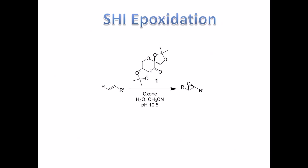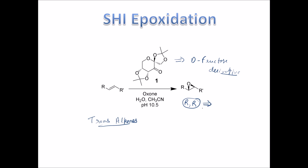The third reaction is Shi epoxidation. Always remember it is used for trans unfunctionalized alkenes. The stereochemistry of the epoxide formed will always be RR when using this catalyst, which is a D-fructose derivative. Whenever you carry out Shi epoxidation, the epoxide formed will have RR stereochemistry — just remember that.